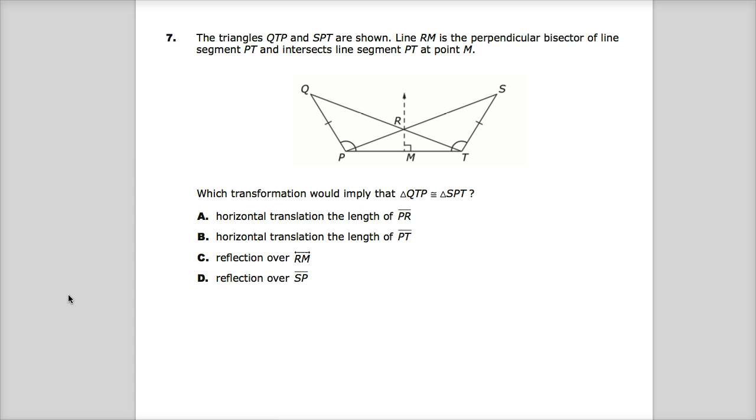The triangles QTP and SPT are shown. You'll notice that they share things, so really the only part that is different between them would be these points here. Line RM is the perpendicular bisector, which means that this distance is the same as this distance. I should mark it with 2 since these are marked. It not only makes a 90-degree angle, it splits this equally in half. It's a perpendicular line and intersects line segment PT at point M, so right here is the point that it intersects.